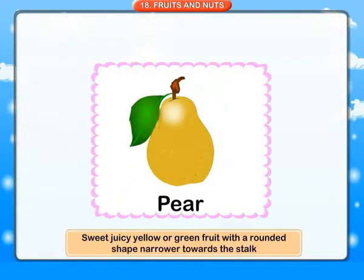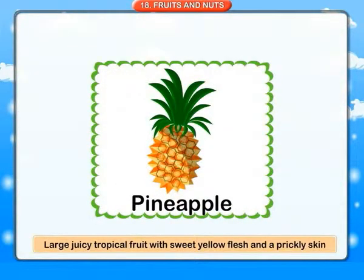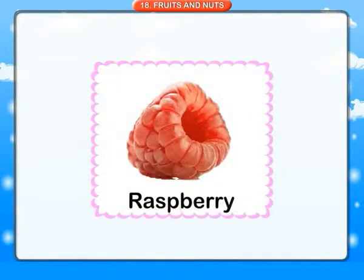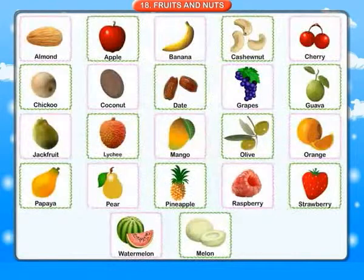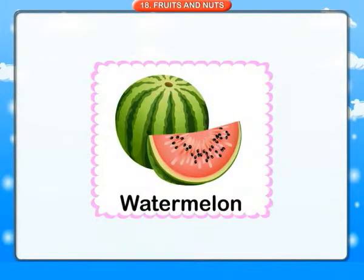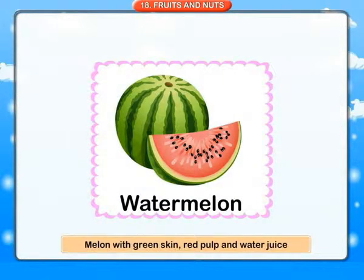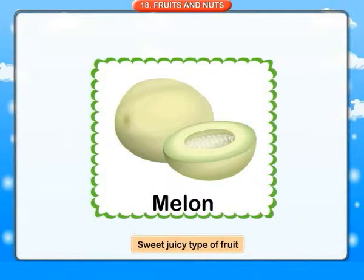Pear: a sweet juicy yellow or green fruit with a rounded shape, narrower towards the stalk. Pineapple: a large juicy tropical fruit with sweet yellow flesh and a prickly skin. Raspberry: a round yellow juicy fruit with a leafy cover. Strawberry: a soft juicy red fruit with tiny yellow seeds on the surface. Watermelon: a melon with green skin, red pulp and watery juice. Melon: a sweet juicy type of fruit.